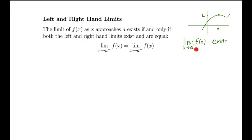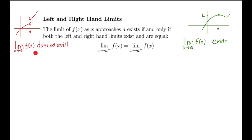If there's no plus or minus after the a, it means we have to consider both sides. This would be the picture if it doesn't work — we get one thing from the left, a different thing from the right. In this case, the general limit as x approaches a from both sides doesn't exist because it can't settle on one of the two things.